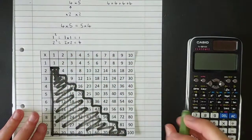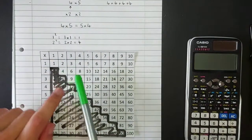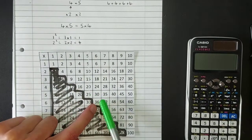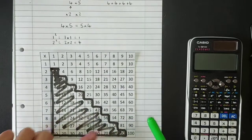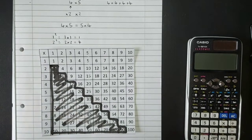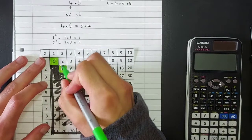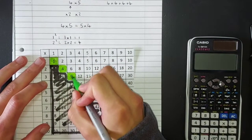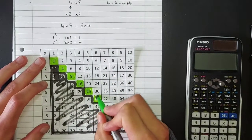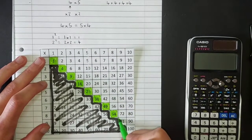One squared equals one times one, which equals 1. Two squared equals two times two, which equals 4. On your multiplication grid you'll see: 1×1=1, 2×2=4, 3×3=9, 4×4=16, 5×5=25, 6×6=36, 7×7=49, 8×8=64, 9×9=81, 10×10=100. These are really useful to know and very applicable for GCSE maths. So step one: memorize your square numbers.